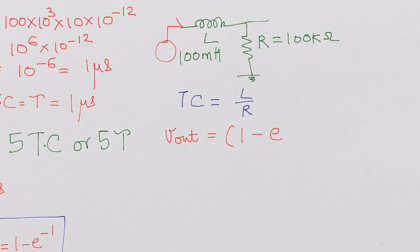And so it would work out to 1 minus e power minus T over L over R.